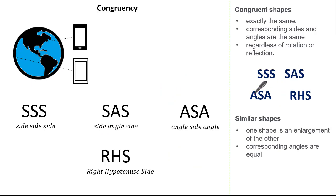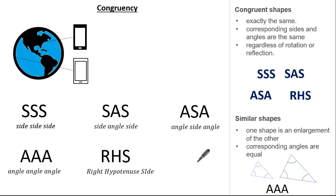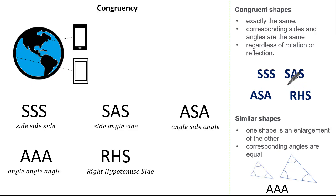This applies to angle side angle and right angle hypotenuse side as well. The only condition which will give us a similar shape is angle angle angle. If you give your friend instructions to draw a triangle with angles 30, 50, and 100 degrees, they would draw a similar shape — same angles but different lengths. So the four conditions which make congruent shapes are SSS, SAS, ASA, and RHS, while the condition for a similar shape is AAA.